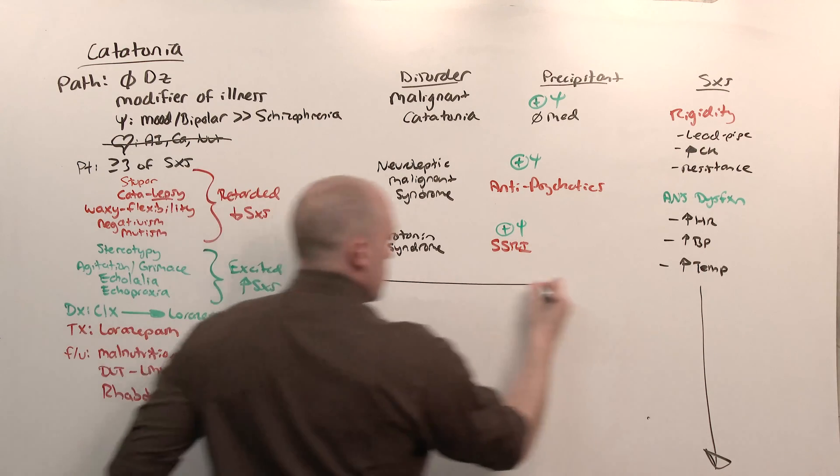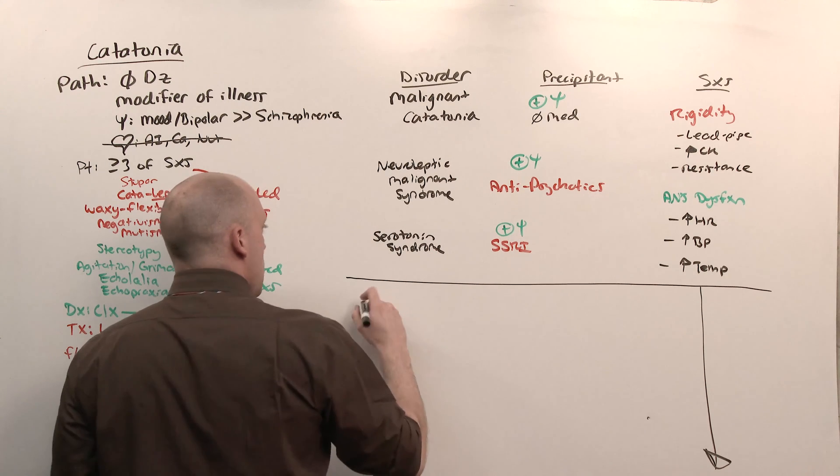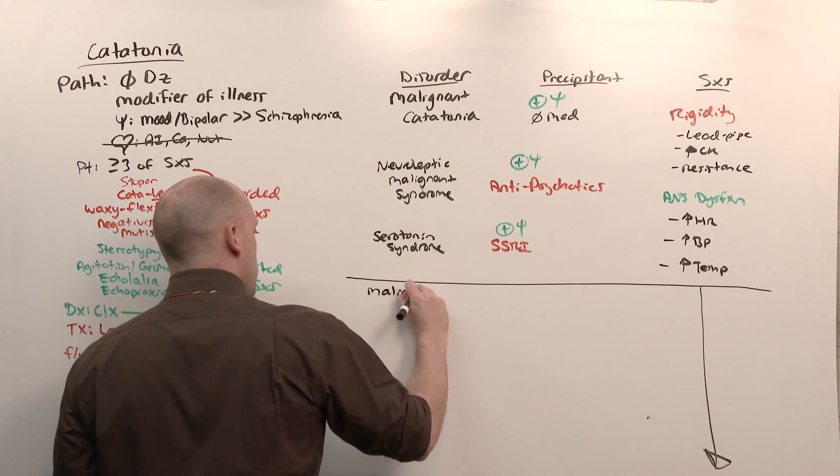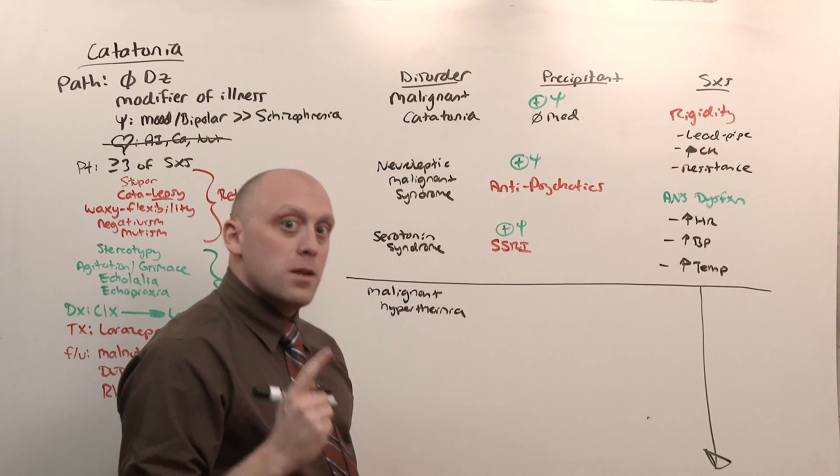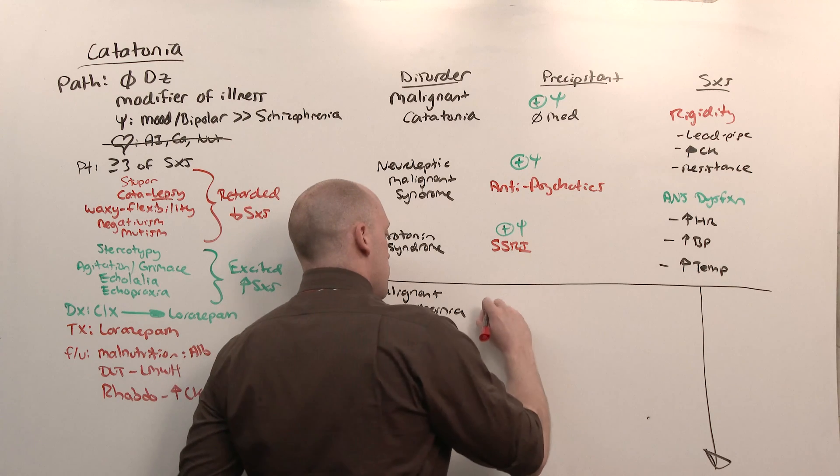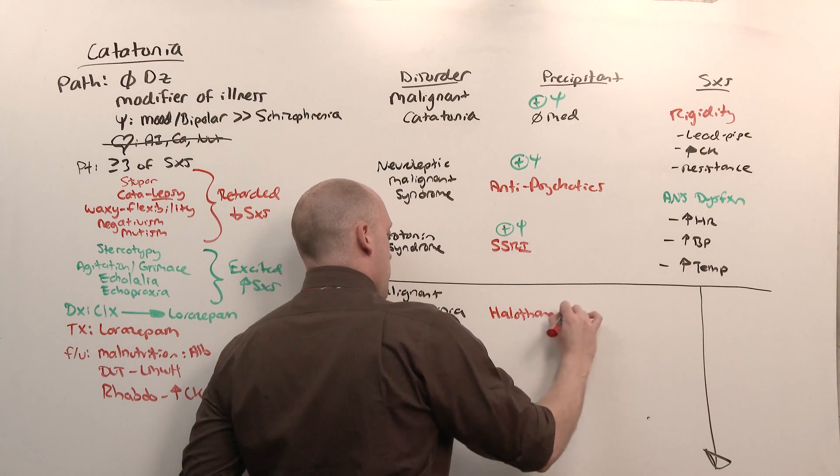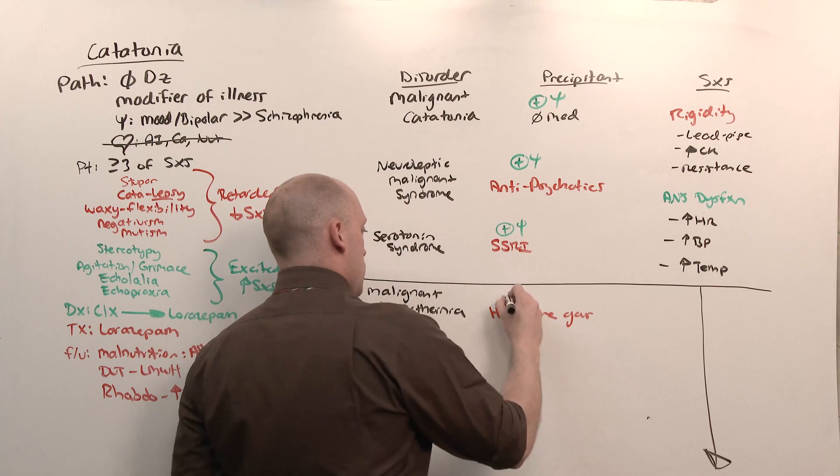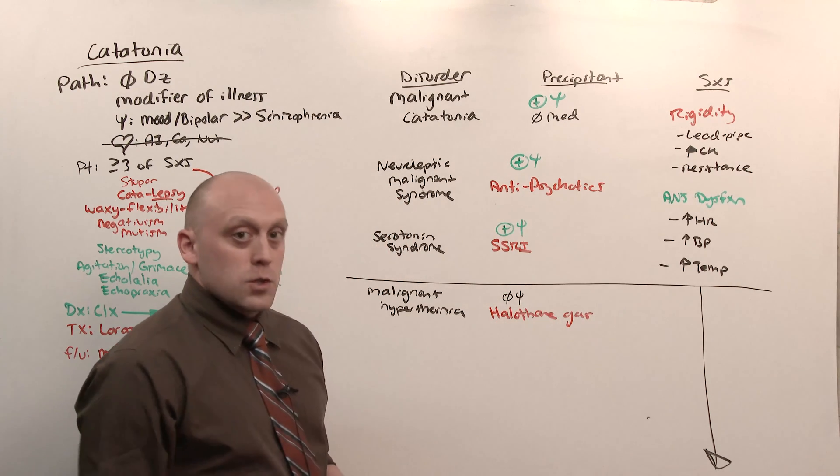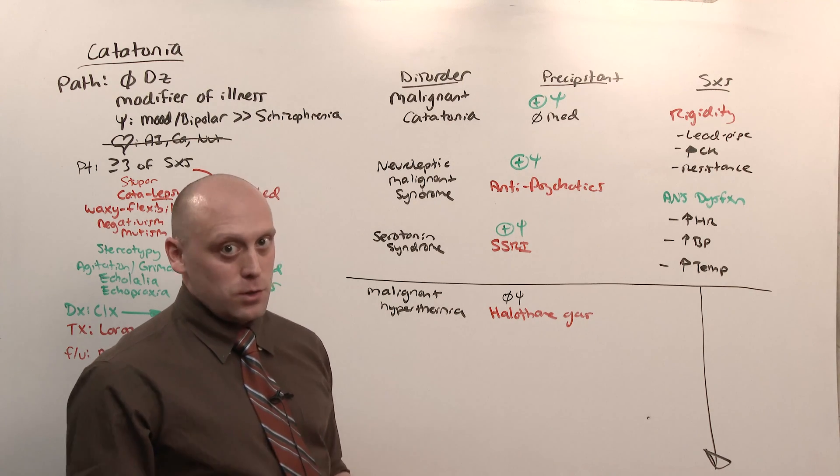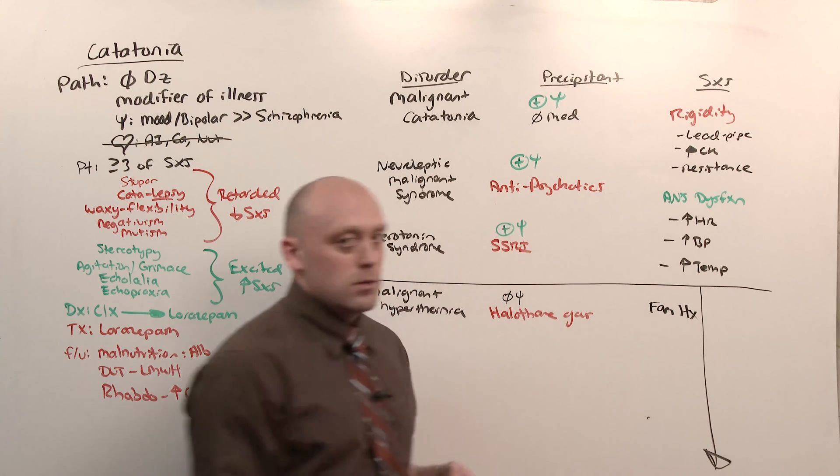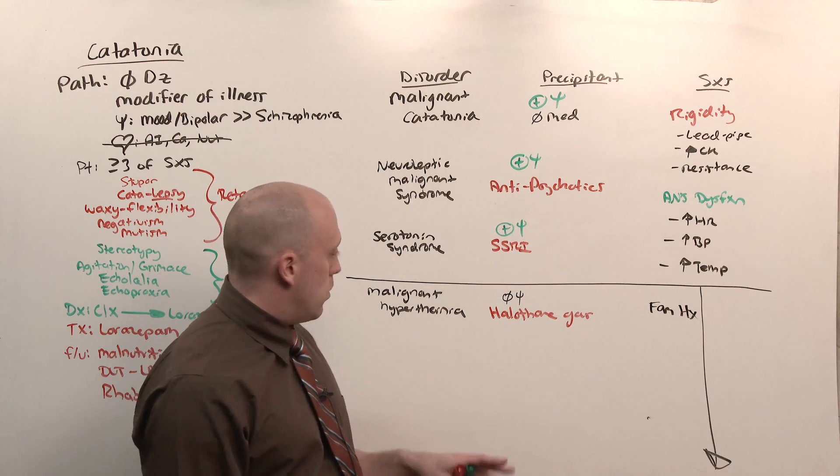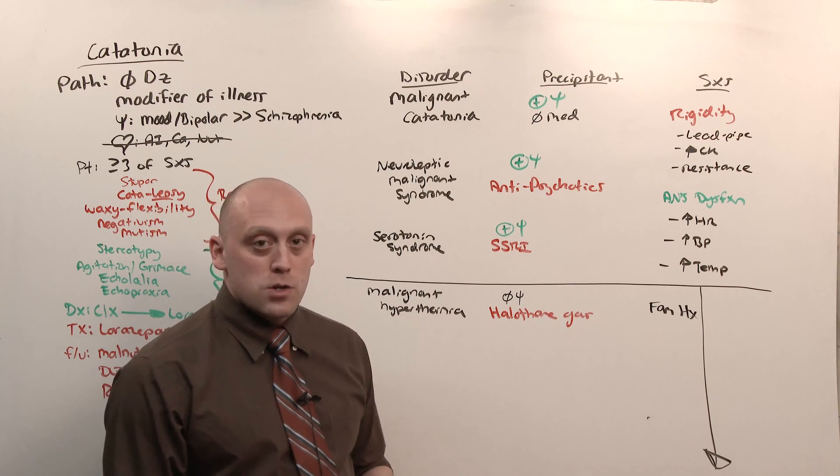The last one on the list has nothing to do with psychiatry at all, but it's still drug induced. That is going to be malignant hyperthermia. Malignant hyperthermia has the same symptoms, but now you've been exposed to anesthesia, usually halothane gas. There's no psychiatric disorder, which is why you're going to ask the patient before they go to surgery, do you have a family history of reactions to anesthesia, which you're going for, or one of the things you're going for, is, are you at risk for malignant hyperthermia, and should I have dantrolene standing by?